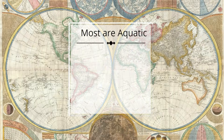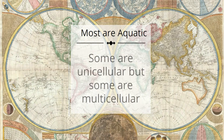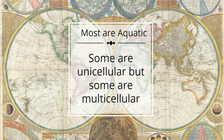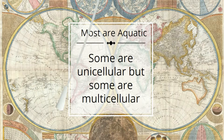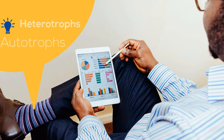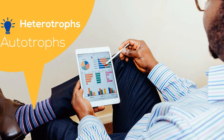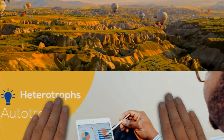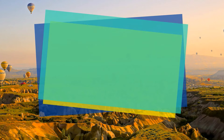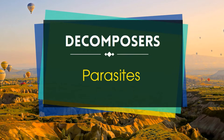Most are aquatic but not all of them. Some are unicellular but many are also multicellular. They are all eukaryotic but some can reproduce sexually and others asexually. Some are heterotrophs but others are autotrophs. Some are decomposers and others are parasites.